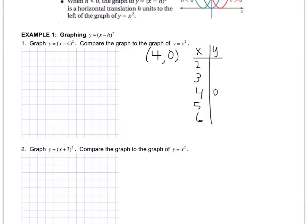So I'm just going to plug (4, 0) right into the table, and now I just have to calculate. When I plug in 3, I get 1. When I plug in 2, I get 4. And then the symmetry will tell me this is 1 and this is 4.